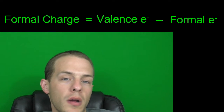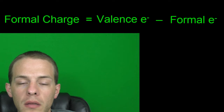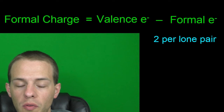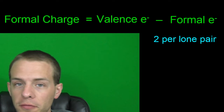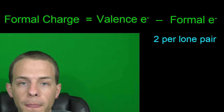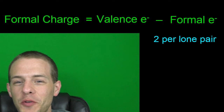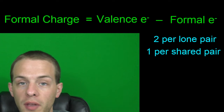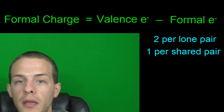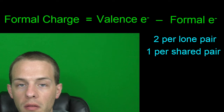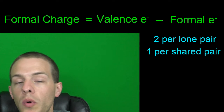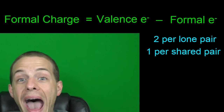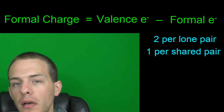Formal electrons may be a new concept. There are two formal electrons per lone pair — those are the electrons an atom has all to itself, not involved in chemical bonding. And then one formal electron per shared pair. So each bond is split down the middle: half goes to one atom, half to the other. In other words, it's valence electrons minus all lone pair electrons minus half of the shared bonding electrons.